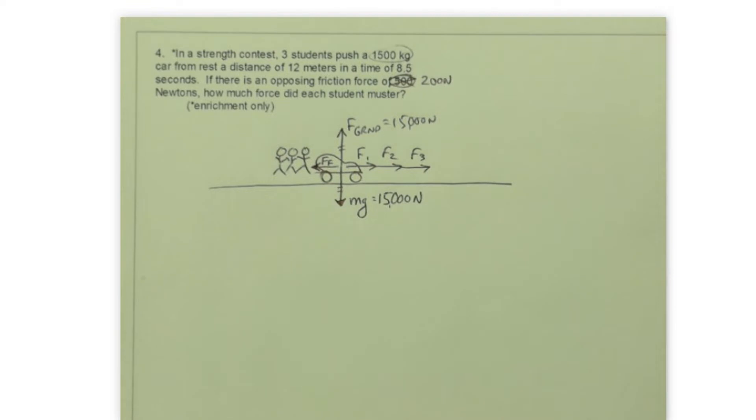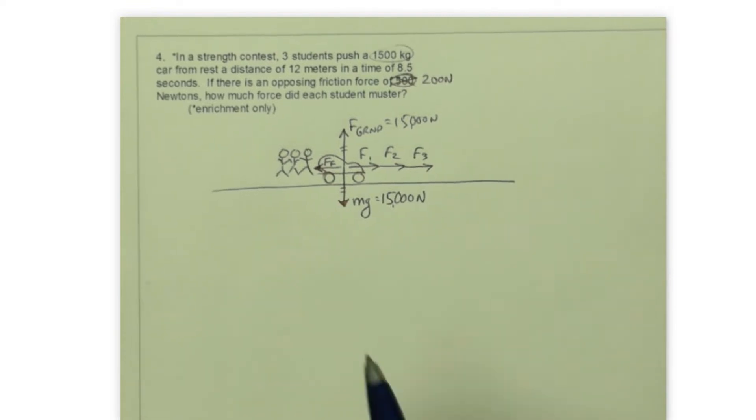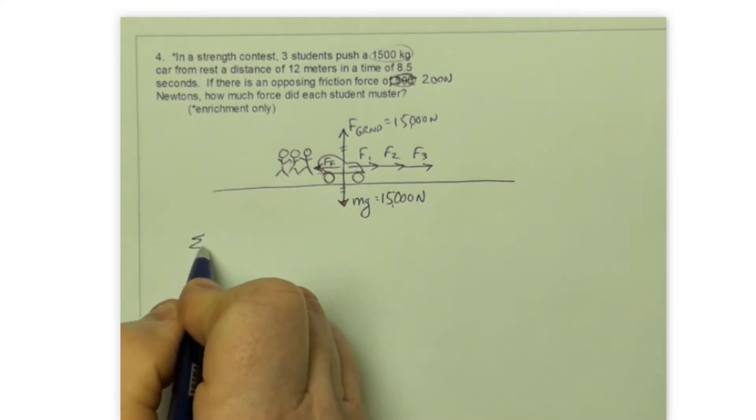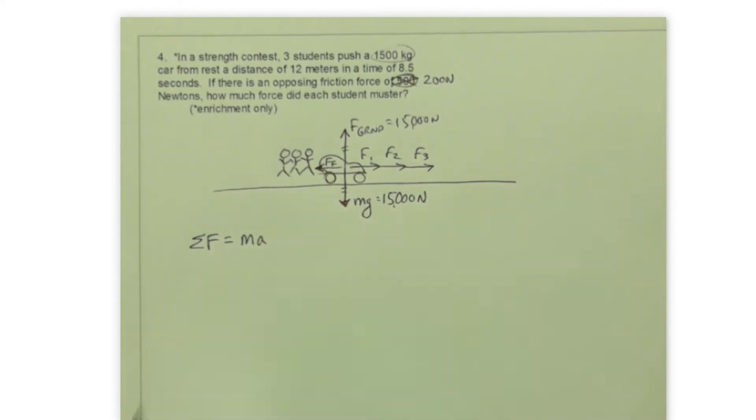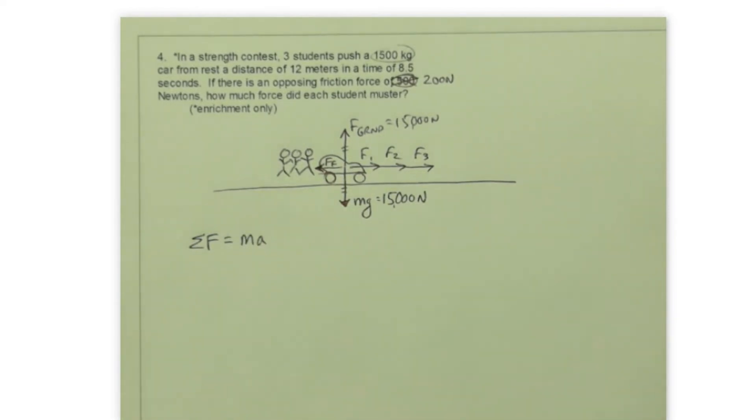Now certainly the car is not in equilibrium horizontally. And so the car is going to accelerate according to Newton's second law. So Newton's second law is the law that we would use to describe changes in motion due to unbalanced forces. Very simple law, huge range of application. Anytime the motion of an object changes, it's due to unbalanced forces. This equation here describes how that change occurs.